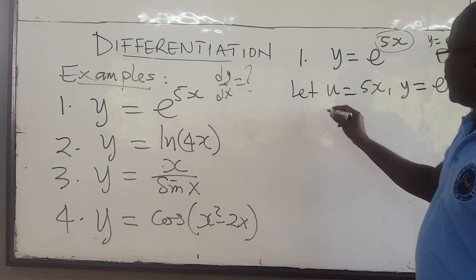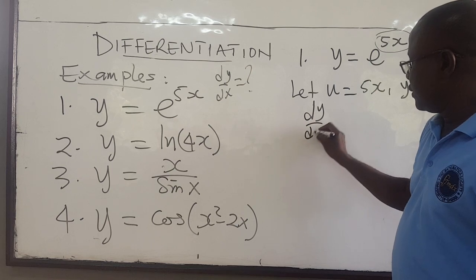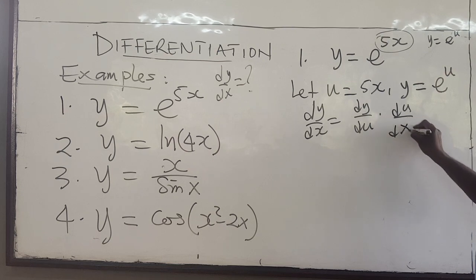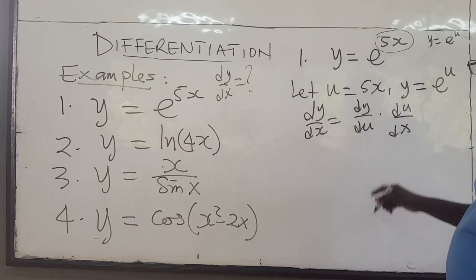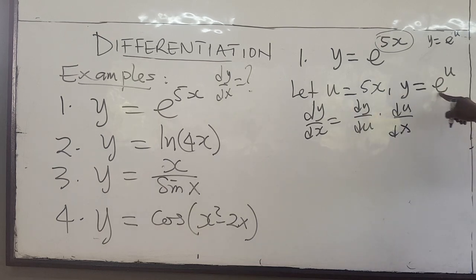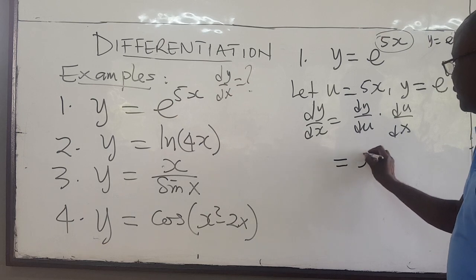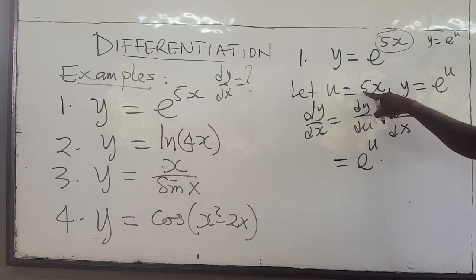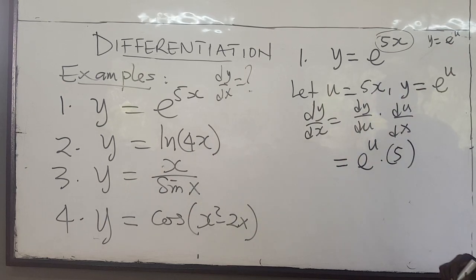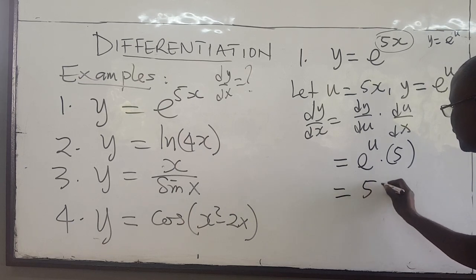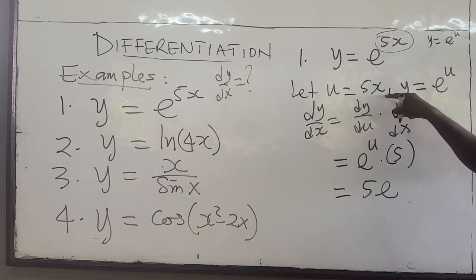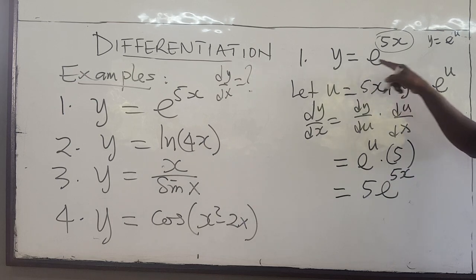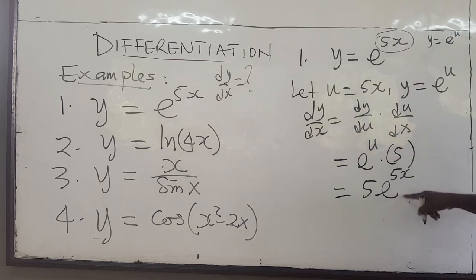By the chain rule, dy/dx equals dy/du multiplied by du/dx. What is dy/du? The derivative with respect to u is just e to the u. And du/dx — the derivative of 5x with respect to x — is just 5. So this equals 5 times e to the u. But u is 5x, so the derivative of y equals e to the 5x is just 5 times e to the 5x.